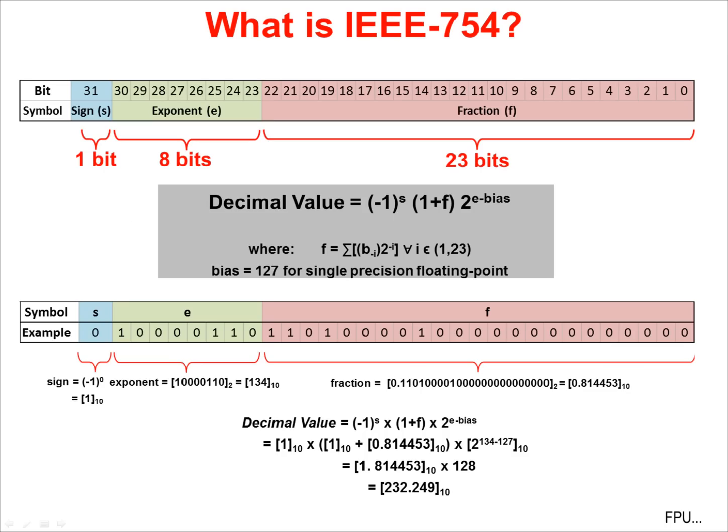IEEE 754 defines a single precision floating point representation. In the top figure, note the sign bit on the far left, followed by 8 bits of exponent, and finally 23 bits of fraction. In the other two figures, you can see how the numeric representation in memory can be converted into a decimal number.